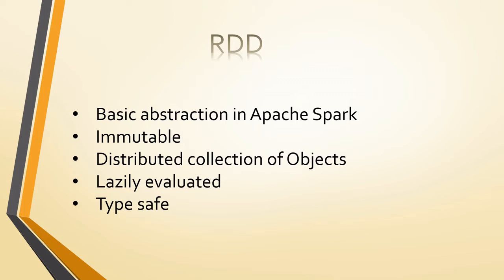But while working with RDDs, the developers found some issues. Any computation that you perform on top of an RDD is opaque to Spark Core, meaning it is kind of a black box. Hence, there is no built-in optimization that can be done on RDDs.